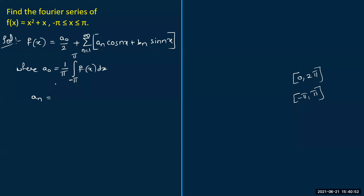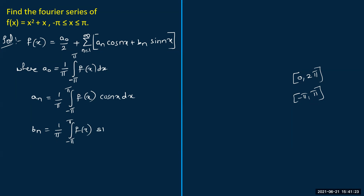Euler's formula for Fourier coefficients: aₙ = (1/π) ∫₋π^π f(x)cos(nx) dx. As I told you, aₙ are the coefficients of cosine, so cosine comes in the integral as well — f(x) times cos(nx). For bₙ: bₙ = (1/π) ∫₋π^π f(x)sin(nx) dx. These are the three formulas used to calculate the Fourier coefficients.